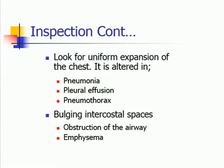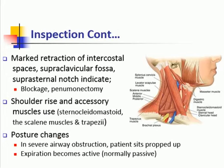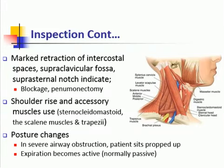After assessment of the shape of the chest, look for uniform expansion of the chest. It is altered in pneumonia, pleural effusion, and pneumothorax. Also look for signs of bulging intercostal spaces, which may be due to obstruction of the airway and emphysema. Marked retraction of intercostal spaces, supraclavicular fossa, and suprasternal notch indicate blockage or pneumonectomy. Shoulder rise and accessory muscle use may be due to respiratory distress. In severe airway obstruction, the patient sits propped up and expiration becomes active, whereas normally it is passive.